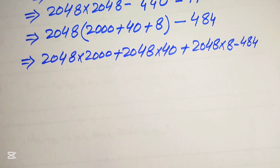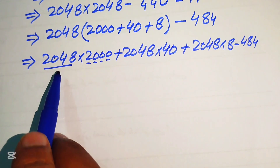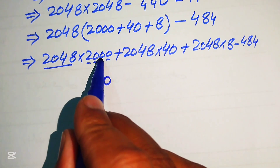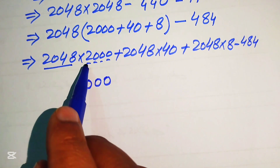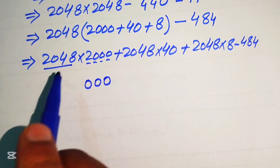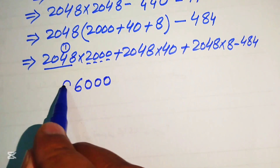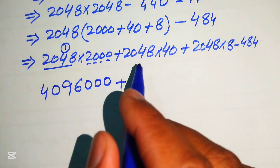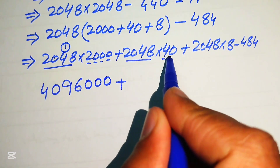Now we multiply these values. We treat 2048 as our one number and break the other number into its parts. Multiplying by the zeros in 2000 gives 0 for each digit. Then we multiply this 2 on all of the digits of 2048: 2 times 8 is 16, write 6 carry 1; 2 times 4 is 8, plus 1 is 9; 2 times 0 is 0; 2 times 2 is 4 — giving 4,096,000.